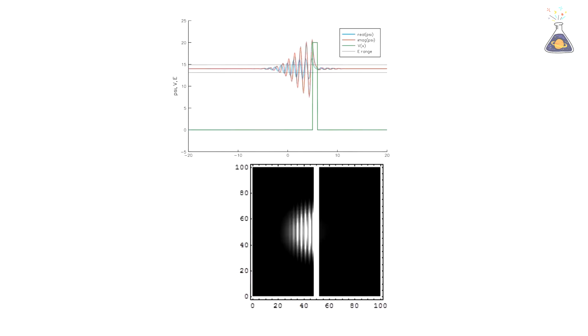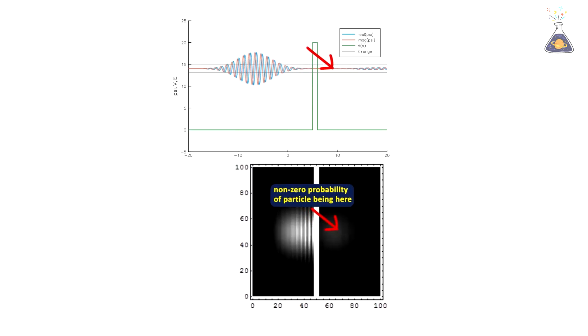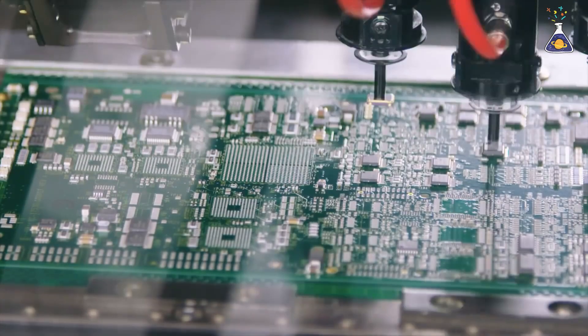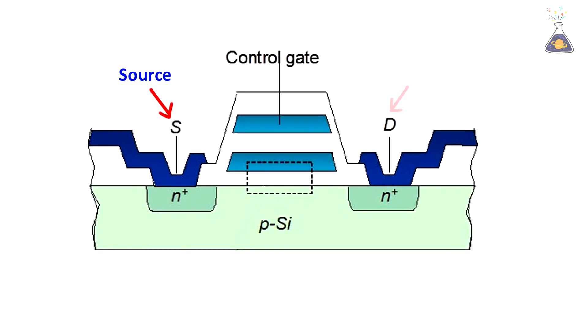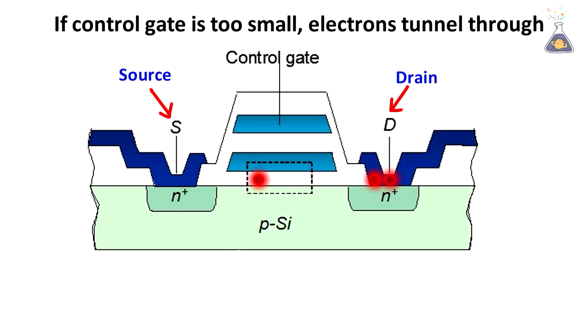Since electrons have wave-like properties, there's a probability that they can suddenly jump past barriers. This means that when transistors become too small, electrons no longer follow their designated paths and begin leaking into unintended areas.